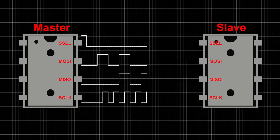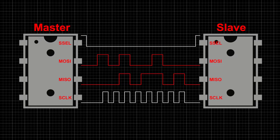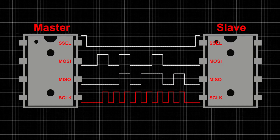Here is what a typical transaction over SPI looks like. The master drives the slave select line of the slave device it wishes to communicate with low. The master and the selected slave then transmit data over MOSI and MISO lines respectively. The bits transmitted over the two lines are sampled on the clock edges of the clock.